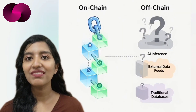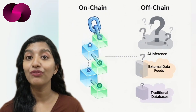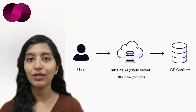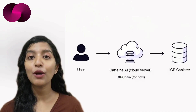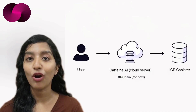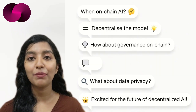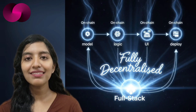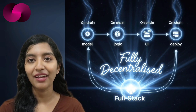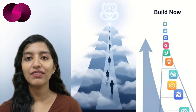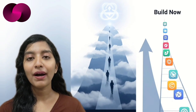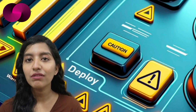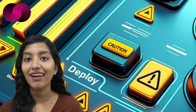That said, there are open questions around what parts of the system are decentralized and which still rely on off-chain components. While the final applications run on-chain using ICP canisters, the AI that interprets the user's prompts is currently hosted off-chain. This has prompted discussion among users more deeply invested in decentralization principles. The ideal scenario for some would be a version where the entire process — from model inference to deployment — lives on-chain, but technical limitations make this a difficult target for now.